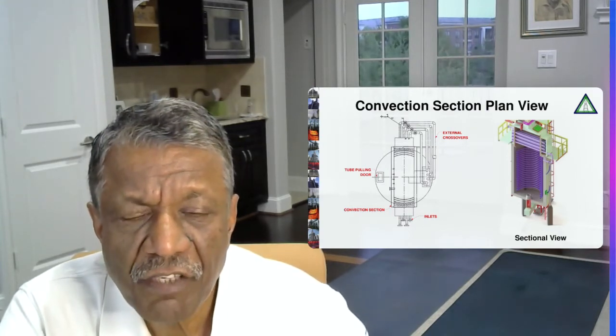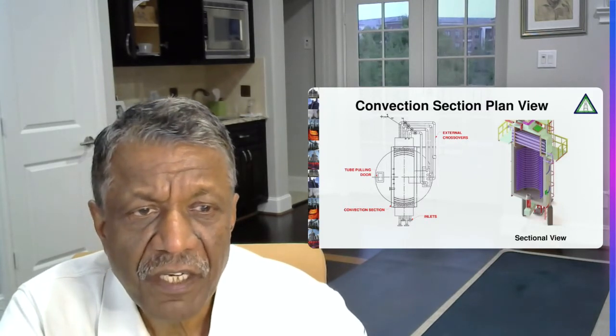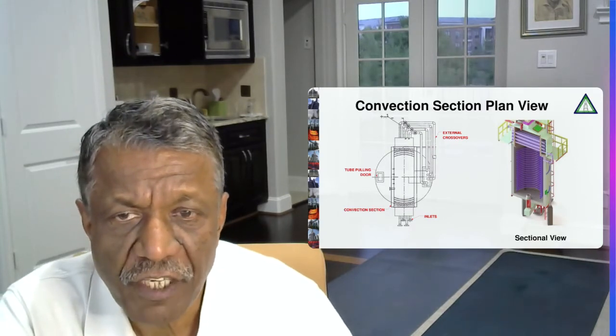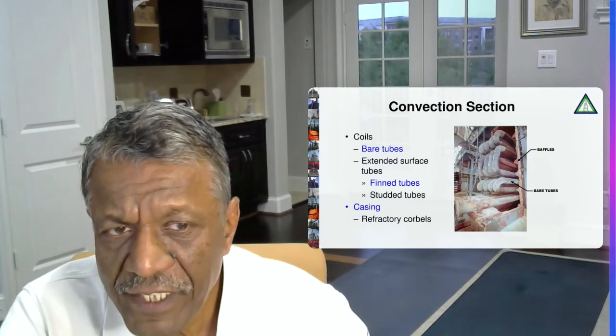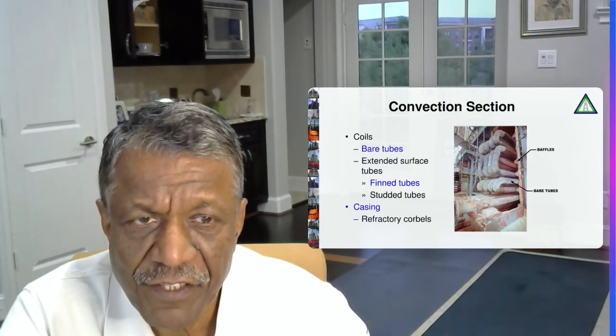The 3D model we are putting over here shows a helical coil with a burner in the center. Helical coils are used for small heaters. As I said, in the convection section we have bare tube, generally first two or first three rows. And then we have extended surface tubes.